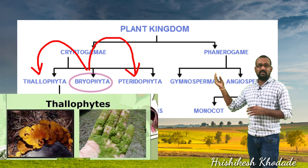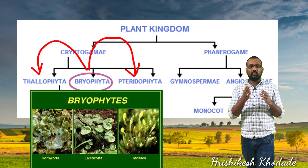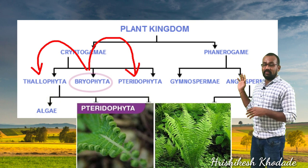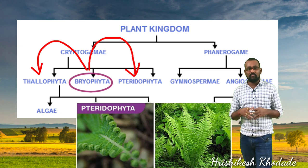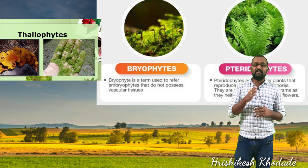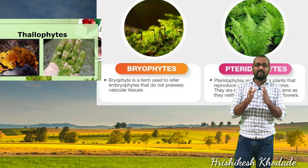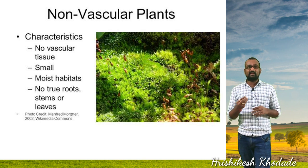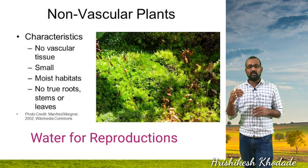Thallophytes have a thallophytic type of body, but bryophytes show a somewhat more advanced body. Pteridophytes are more advanced plants because they contain a true vascular system, which is absent in bryophytic plants. Therefore, bryophytes are considered intermediate between thallophytes and pteridophytes, and because they lack vascular tissues, they must occur near water areas.